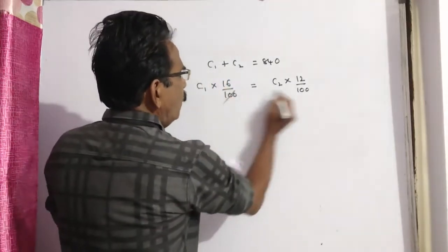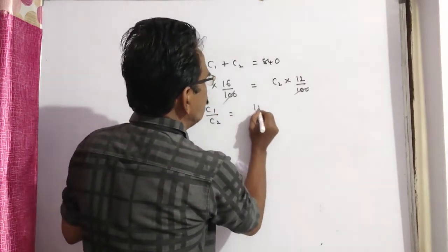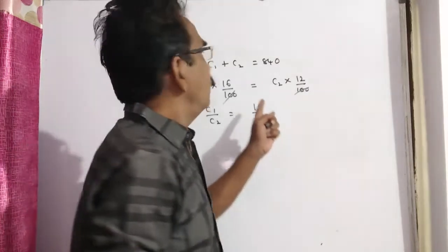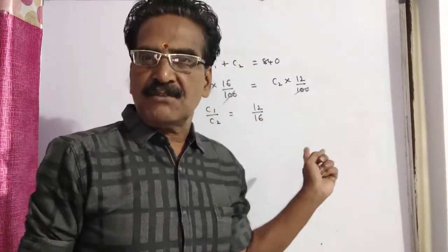Now for C1 by C2, C1 by C2 is equal to 12 by 16. This is the ratio of C1 and C2. We know C1 plus C2, we can divide rupees 840 in the ratio 12 is to 16 to get the cost price of each watch.